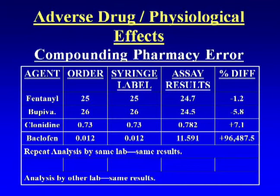The patient ended up in the MICU — a clear case of baclofen overdose with seizures, coma, and unresponsiveness. She was in the MICU for about a week and a half and gradually recovered, but ended up with residual seizures, and the case went to court. The pharmacy that prepared the drug was involved in litigation, and they used the analyses we obtained as part of the claim against them.